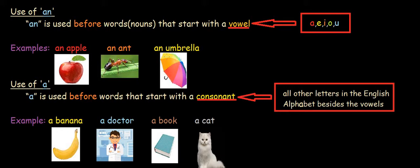Umbrella. It starts with the vowel u. So, we put an before that as well.